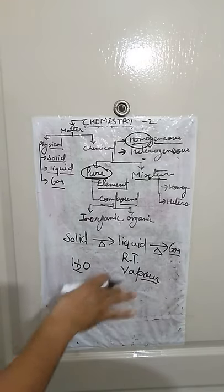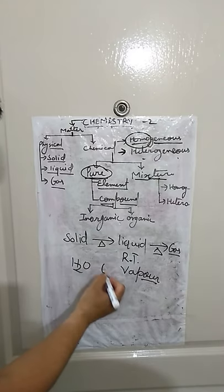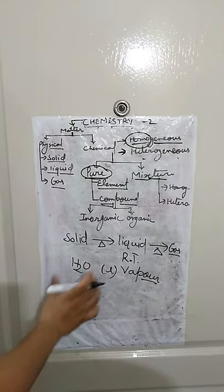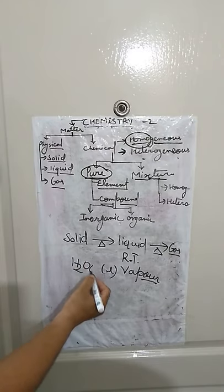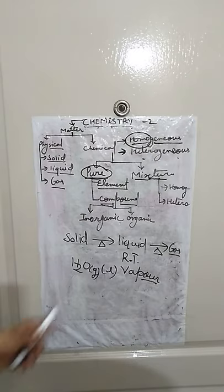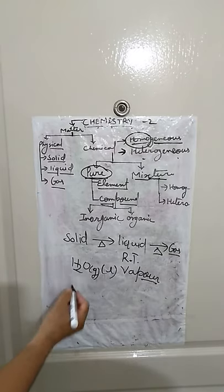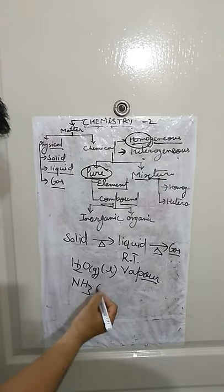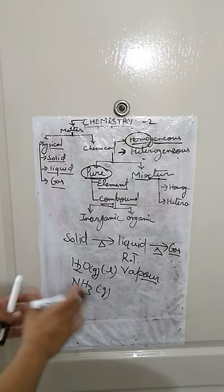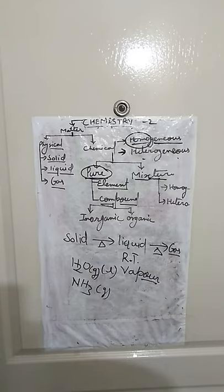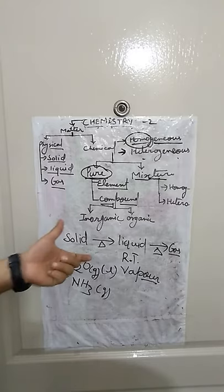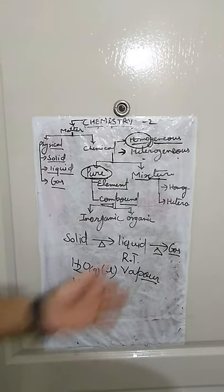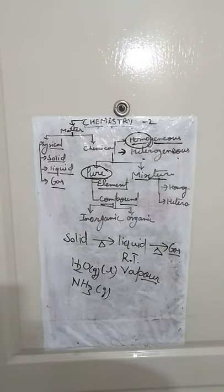For example, H₂O at room temperature of 27°C exists in liquid form. Any substance that is already gaseous in nature at room temperature — below its boiling point — is called a gas, not a vapor. Vapor refers to the gaseous form of a substance that is normally liquid at room temperature.